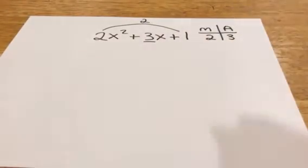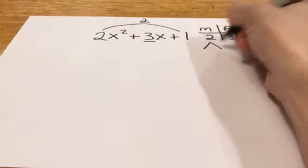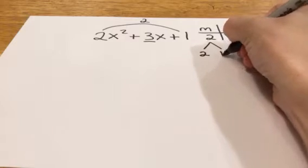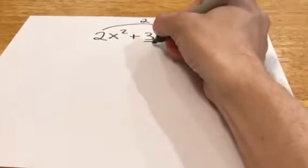So we got to multiply to two, add to three. So what are two numbers do you think that'll multiply to two and add to three? Go ahead and think about it right now and I'll go ahead and write them down. Two and one will work because they'll multiply to two and add to three. So these are the two numbers that I want to choose.